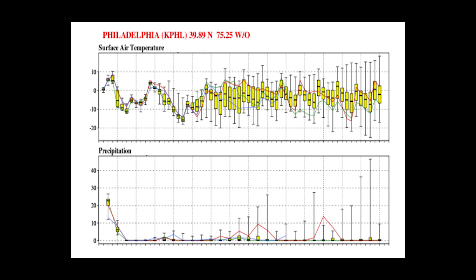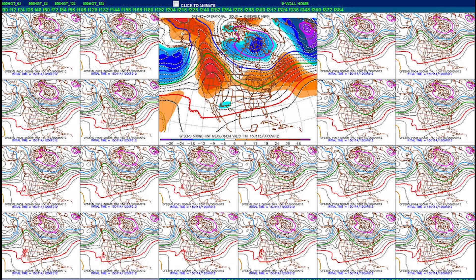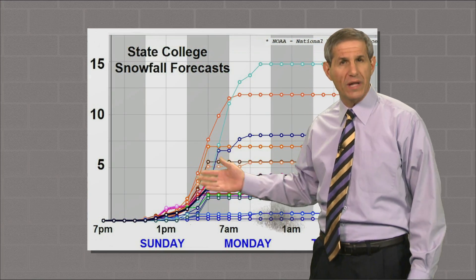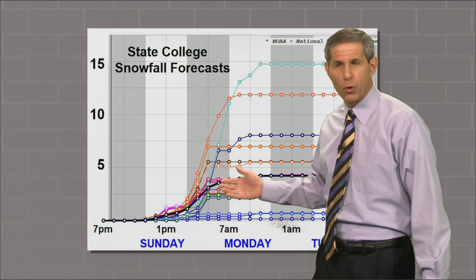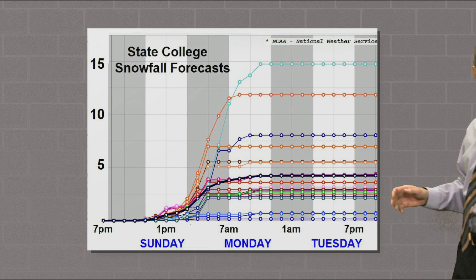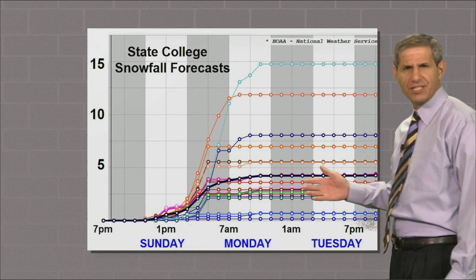All these products come from ensembles — that is, we run the computer models multiple times with slightly different initial conditions to generate multiple forecasts. Here's a graphical look at 21 of those forecasts from our short-range model last Saturday, for snow accumulation in State College on Sunday and Monday. And yes, there are 21 lines there.